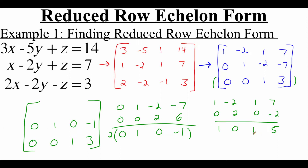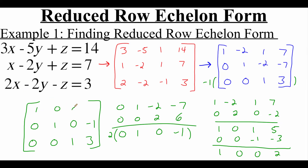But now I need to adjust that one in the third entry. So I'm going to go back to the bottom row — in order to get rid of that one, we're going to need a negative one. So I multiply the bottom row by negative one: negative one times zero is zero, negative one times zero is zero, negative one times one is negative one, and negative one times three is negative three. When I add these together: one plus zero is one, zero, zero, and five minus three is two. So the top row becomes one, zero, zero, two.